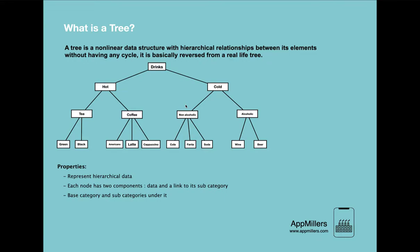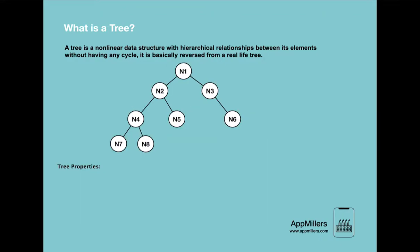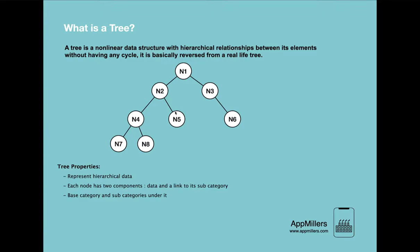Now let's look at the formal tree data structure properties, and it's no surprise they match what we observed. First, a tree is used to represent data in hierarchical form. Second, every node has two components: data and a reference to subnodes. Finally, a tree has a root node, and under the root node we have subnodes.